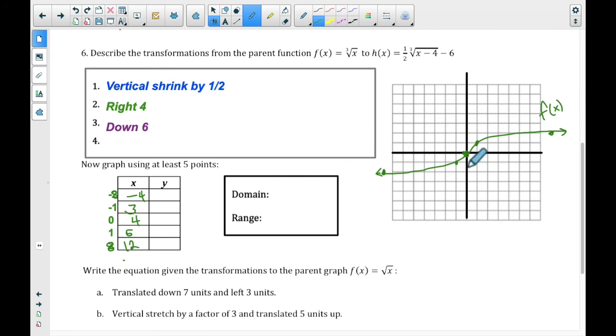All right, my parent function starts at the origin, goes up 1 over 1, down 1 over 1, and then over 8 and up 1. All right, 7 from there, 8 total. So that's my parent function. Now I need to do my transformations. It should be vertical shrink by 1 half, go right 4, down 6. All right, let's see how we do it with a table.